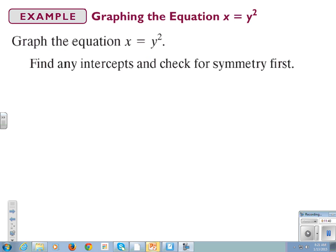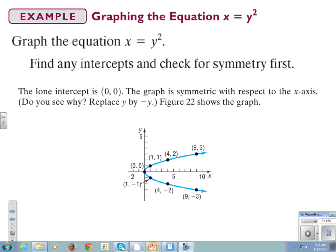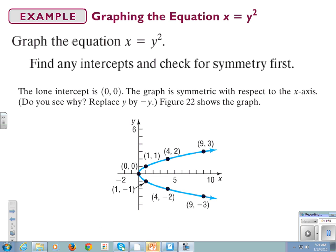x equals y squared. Oh my goodness, this is a twist on an old classic, you know, like when you get gourmet meatloaf. So instead of y equals x squared, we get x equals y squared. We're going to find our intercepts. The lone intercept is 0 as well. The graph is symmetric with respect to the x-axis, because when I plug in negative y, it'll give me positive.